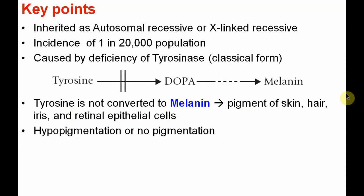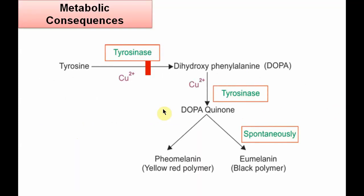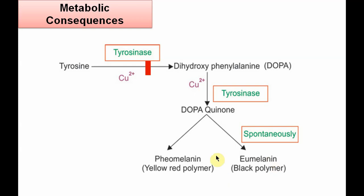Let us see the metabolic consequences. Tyrosine is converted to dihydroxyphenylalanine, that is DOPA, by the enzyme tyrosinase — a copper-containing enzyme. Then, with the same enzyme, DOPA is converted to dopaquinone. Further, spontaneously, it is converted to eumelanin, which is the black polymer, and pheomelanin, which are yellow-red polymers. Eumelanin is the true melanin — the black polymer that provides pigmentation to our body.